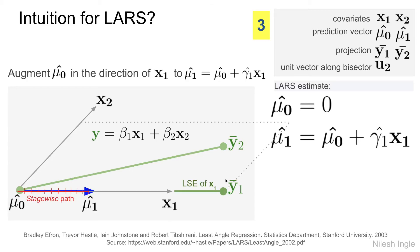So we move in the direction of x1 incrementally and update the value of mu. To mu hat 0, we add the product of gamma hat 1 and x1. Gamma is the quantity by which we are incrementing at each step.